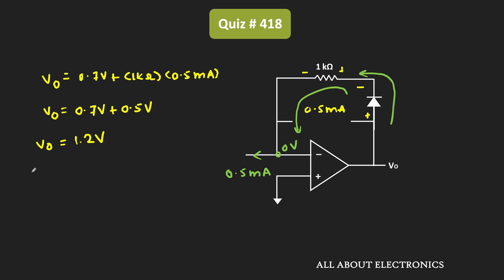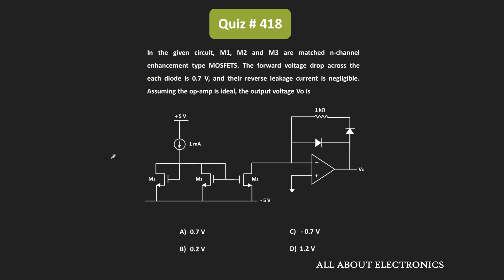The output voltage of the given circuit is equal to 1.2V. Therefore, for the given question, option D is the correct answer. Thank you.